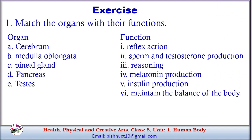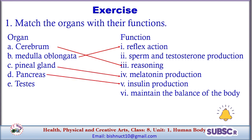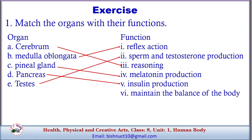A. Cerebrum — 3. Reasoning. B. Medulla Oblongata — Reflex Action. C. Pineal Gland — 4. Melatonin Production. D. Pancreas — Insulin Production. E. Testes — 2. Sperm and Testosterone Production.